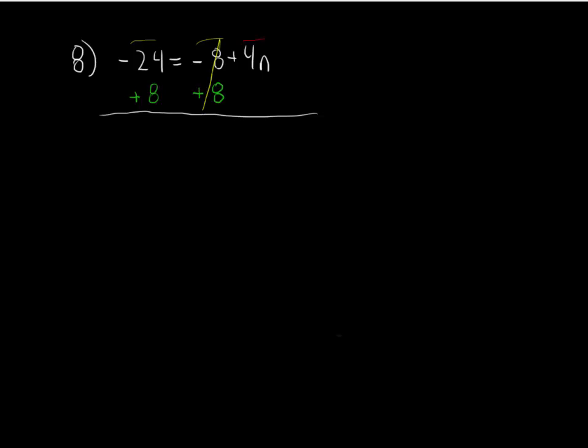Negative 8 and positive 8 cancel out. The equal sign always comes straight down. Negative 24 plus 8. Remember your rules for adding integers. Negative 16. Negative 16, and I haven't done anything to the 4n, so that's going to come straight down. Now maybe I'll bring those a little closer together so it's easier to read.